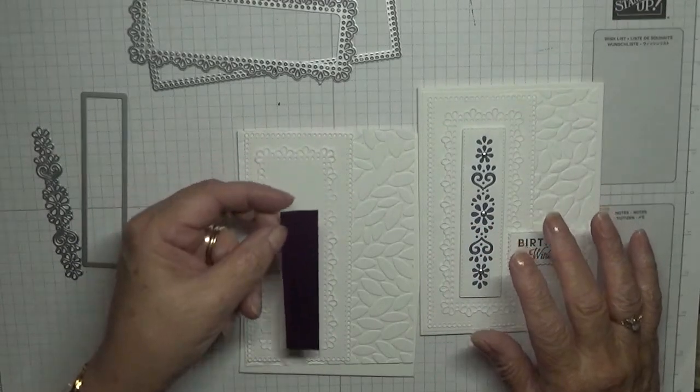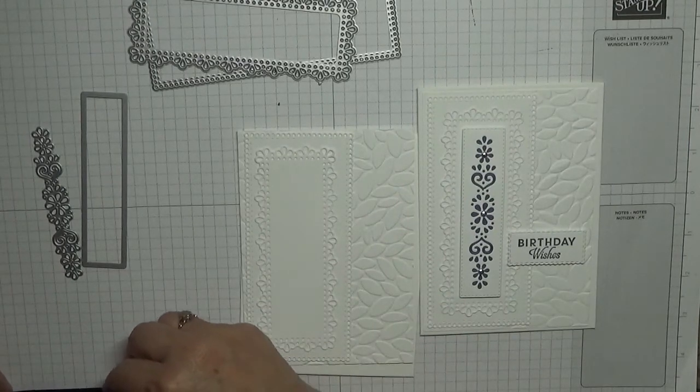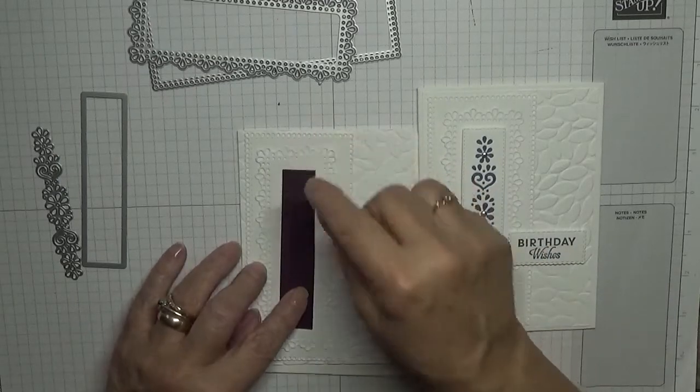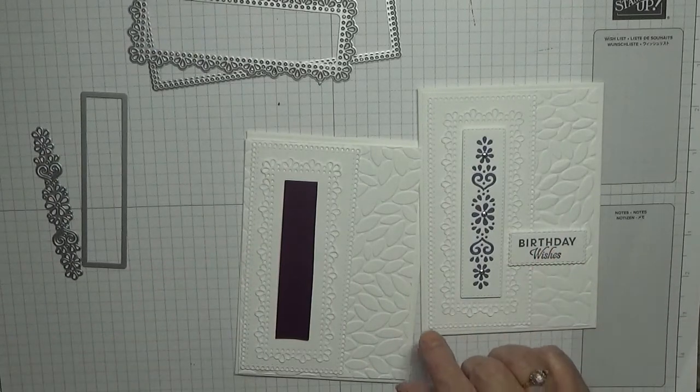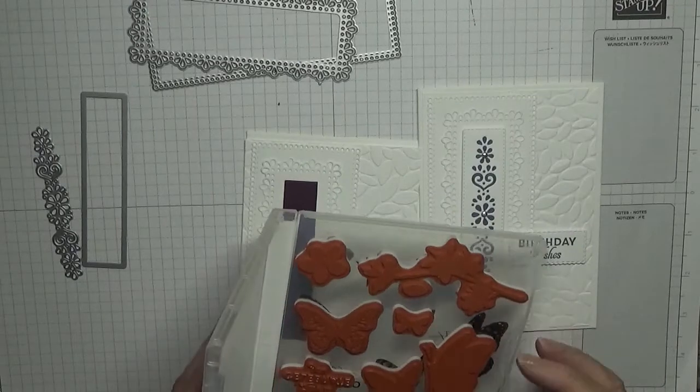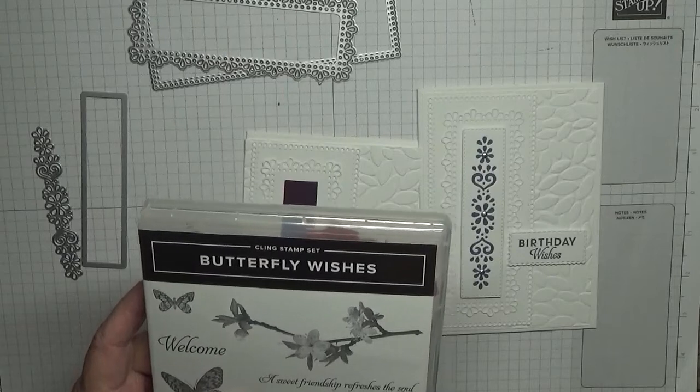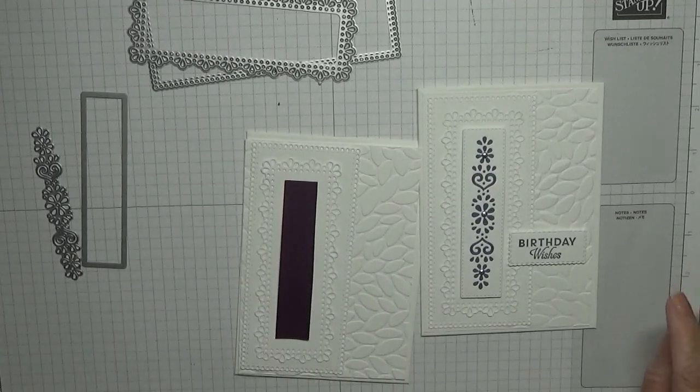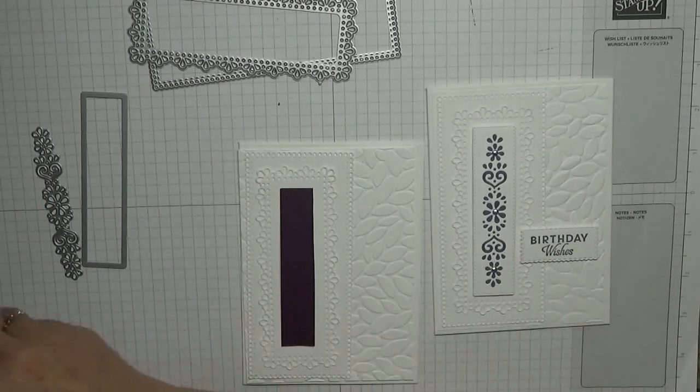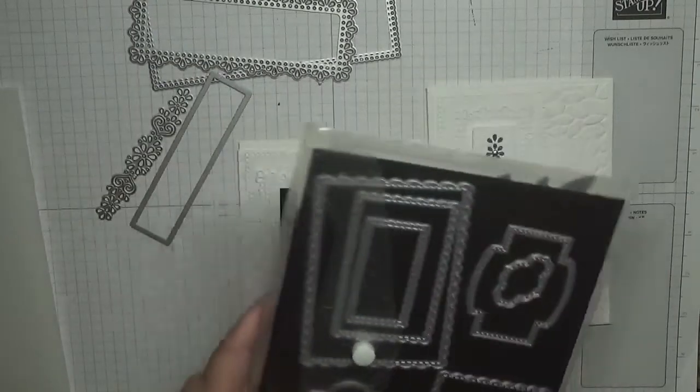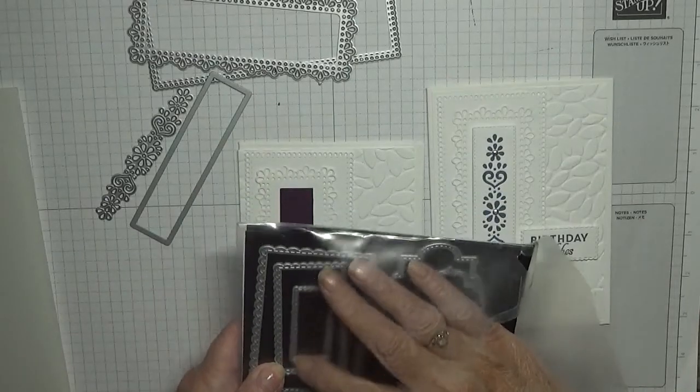On this one I'm going to use black card stock and I've got a piece of card that's three quarters of an inch by three and three quarters, and that will obviously go under there for the sentiment. It just says birthday wishes. So we'll stamp and cut that out. To cut the sentiment out I used the Sweetest stitch dies and I use this little one here.